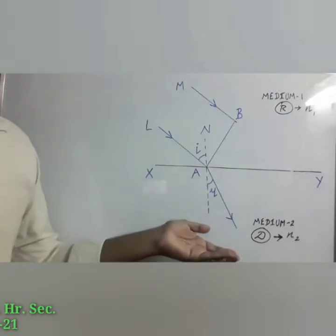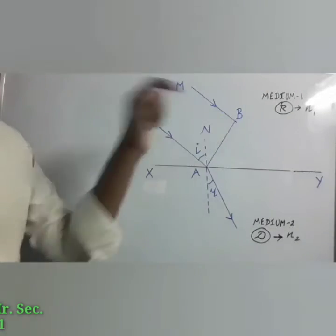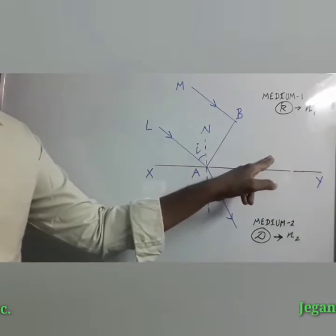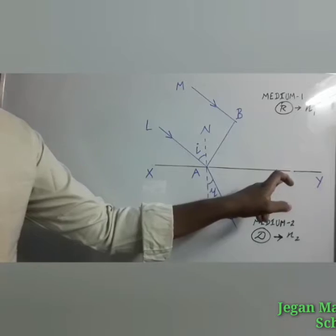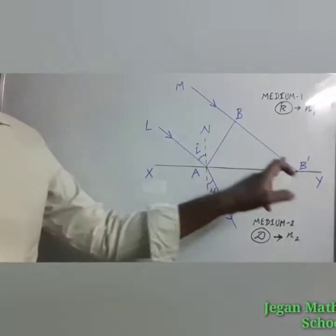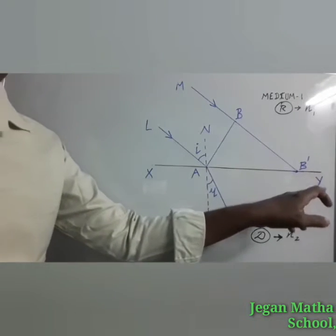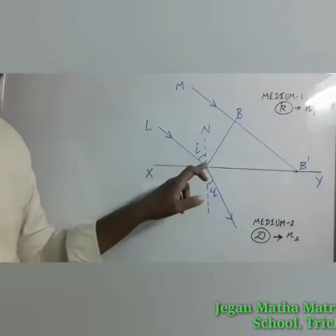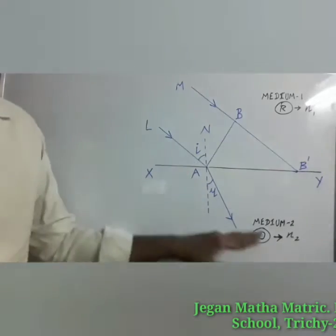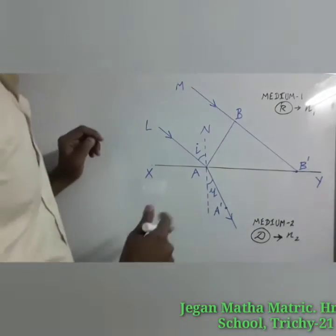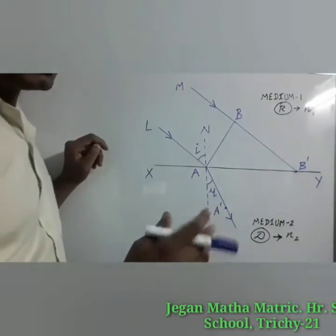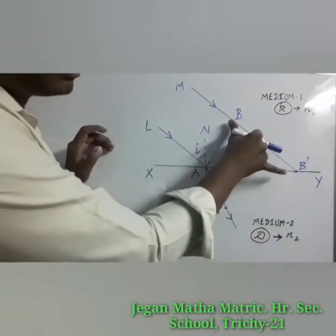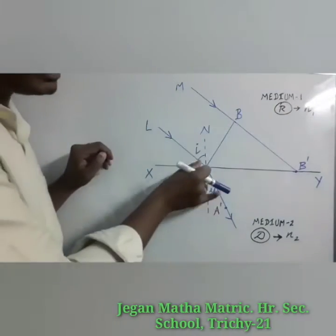Point A has refracted already, but what about point B? Point B has yet to travel a distance BB' to reach the refracting surface. When point B touches the refracting surface at point B', point A would have reached the new point A' in the other medium. We have to consider two distances BB' and AA'. From the diagram you can understand that the length of BB' is greater than the length of AA'.